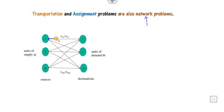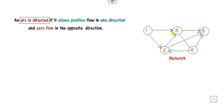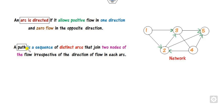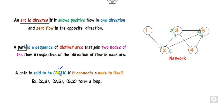You can transport things from one node to another; all of these are networks. If there is a direction given, we call it a directed arc. If flow is allowed only in one direction — say from 1 to 2 — then going from 3 to 1 has value 0 because the direction is only one way. A path is a distinct arc joining two nodes. A path is said to be cyclic if it forms a closed loop — for example, 2 to 3, 3 to 5, and 5 back to 2 forms a loop, as does 1 to 3, 1 to 2, and 2 to 3.